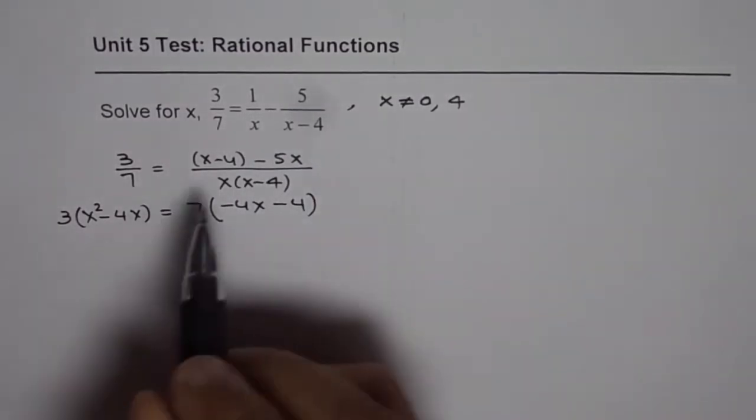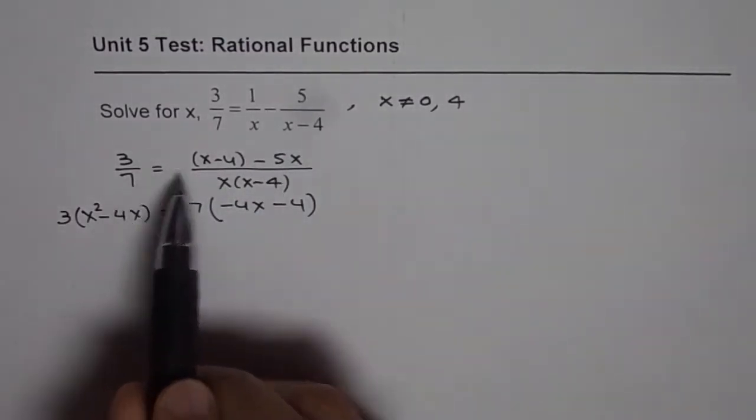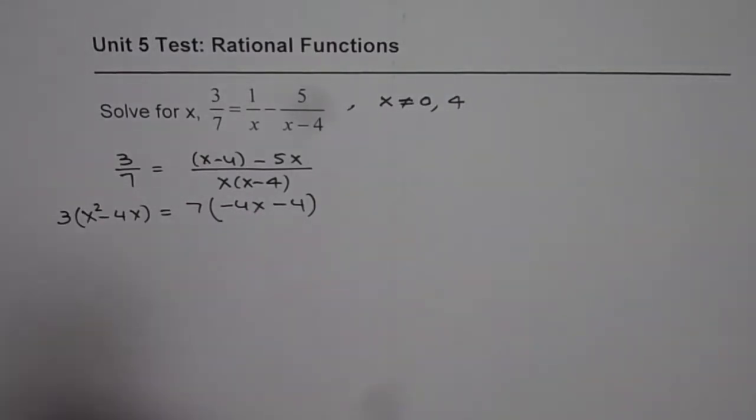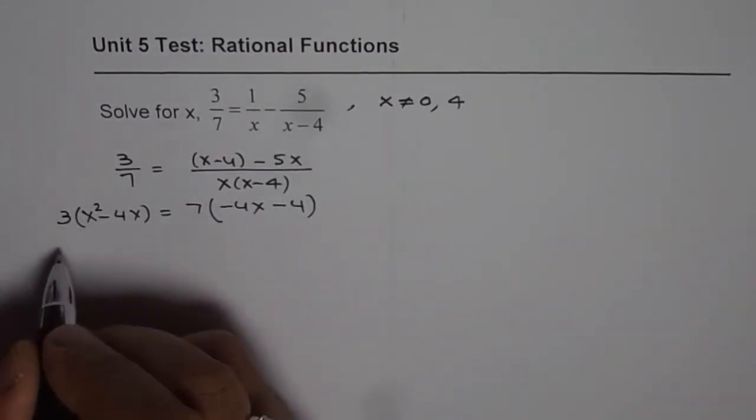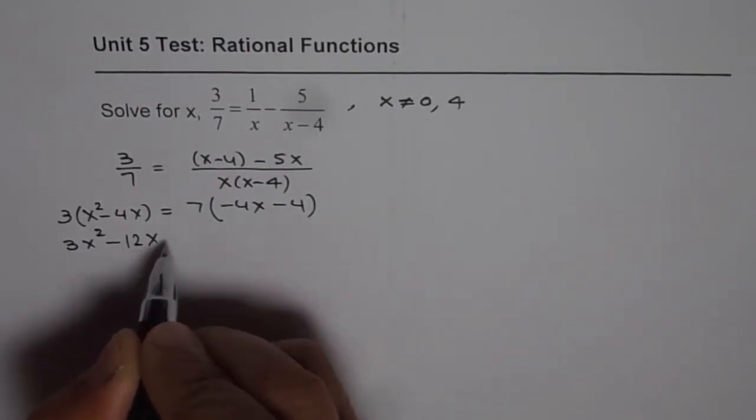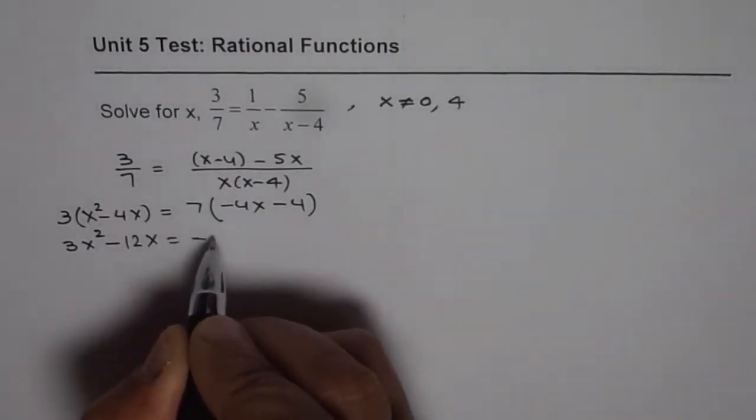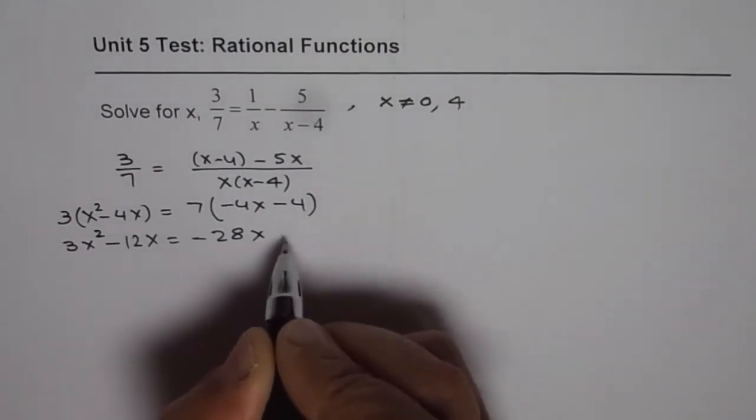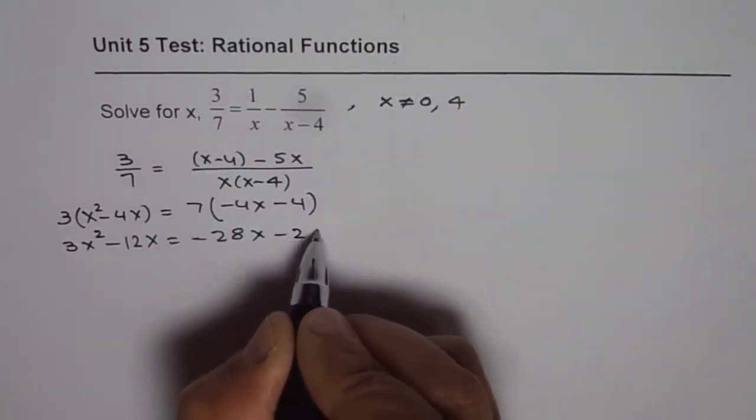So I have two steps here. First simplify and then multiply every term by 7. Now we can open the brackets. We have 3x square minus 12x equals minus 28x, and this is minus 28.